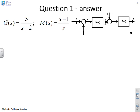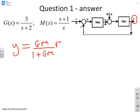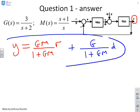Here's a reminder of the block diagram. We've been asked to find y, so we use the forward path over one plus return path formula. For r: the forward path between r and y is GM, and the return path is GM, so y equals GM over (1 + GM) times r. For the disturbance d: the forward path between the disturbance and the output is G, and the return path is again GM, giving G over (1 + GM) times d. That is the answer — no more is required.